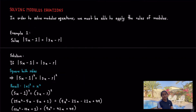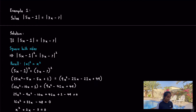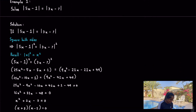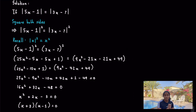Solving modulus equations. Example 1: we apply Rule 5 — squaring both sides removes the modulus entirely. From there, expand both sides and solve for x. Always show your working because mistakes are easy to make. Square both sides, apply the rule, and simplify to get the x values.